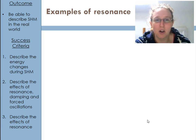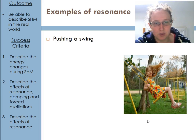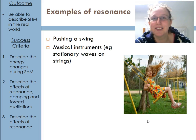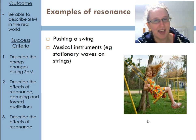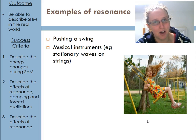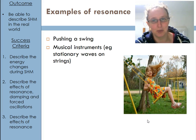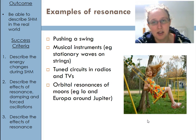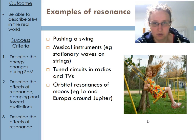Resonance happens a lot. Pushing someone on a swing — the reason you go high is because you get pushed at the natural frequency. Musical instruments are a great example: stationary waves occur when vibrating at a frequency that fits a full number of half-wavelengths, producing a standing wave. Other examples include tuning circuits in radios and TVs, and orbital resonances of the moon.